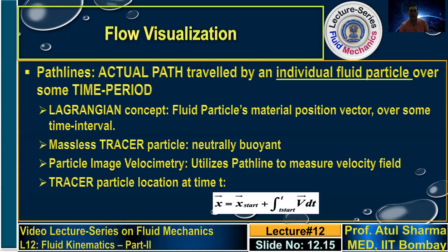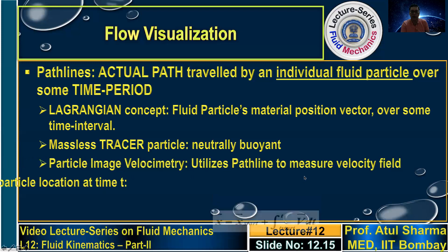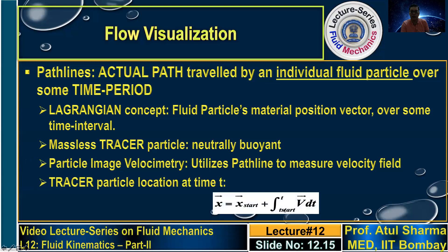We can obtain the location of the tracer particle at any time instant by the expression: the position vector at any time equals the starting position vector plus the time integration of velocity from the start time to that time instant.